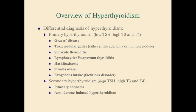The primary causes of hyperthyroidism include Graves' disease (the number one cause), toxic nodular goiter (single adenoma or multiple nodules), subacute thyroiditis, lymphocytic and postpartum thyroiditis, and Hashitoxicosis. Primary hyperthyroidism is characterized by low TSH and high T3 and T4. Secondary causes, such as pituitary adenoma, were addressed in the anterior pituitary diseases section.